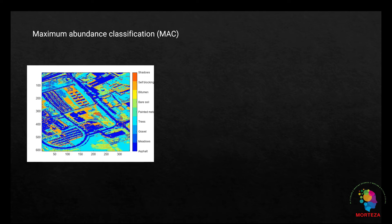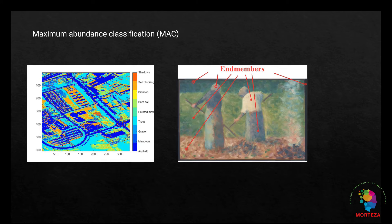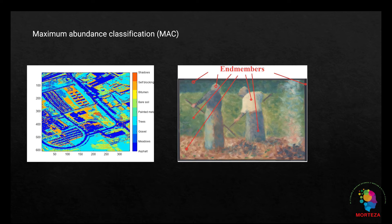The end-members should be located before the classification process starts, because they specify the classes into which the hyperspectral image is going to be classified. There are different methods to specify the end-members, which is a topic for a separate video. The simplest way is to choose the pure pixels visually and assign them as end-members. This is not the most scientific method, but it is not the most inaccurate way either. These seven points that you observe have already been chosen and saved as end-members. Let's go to Python and perform these two methods.